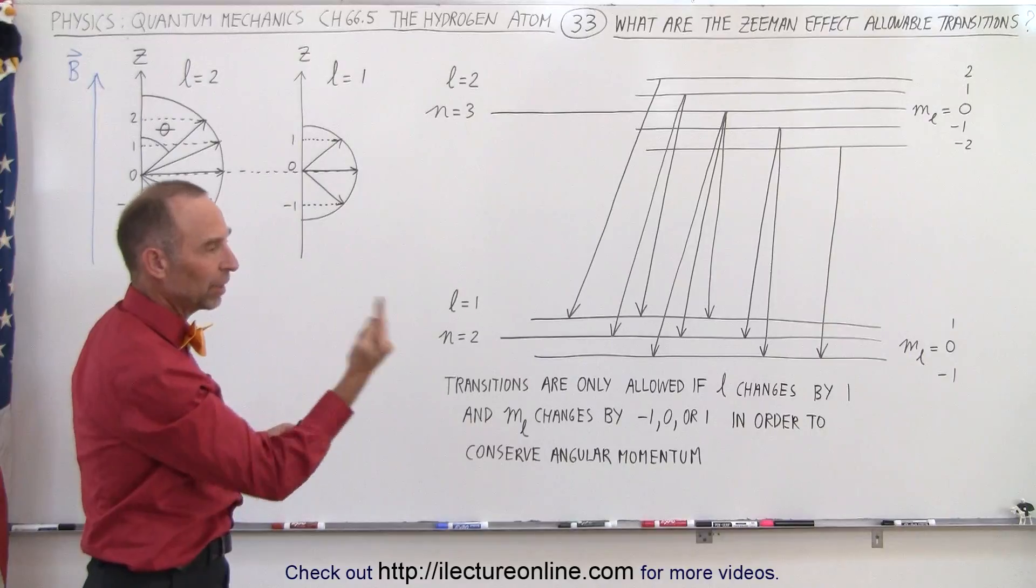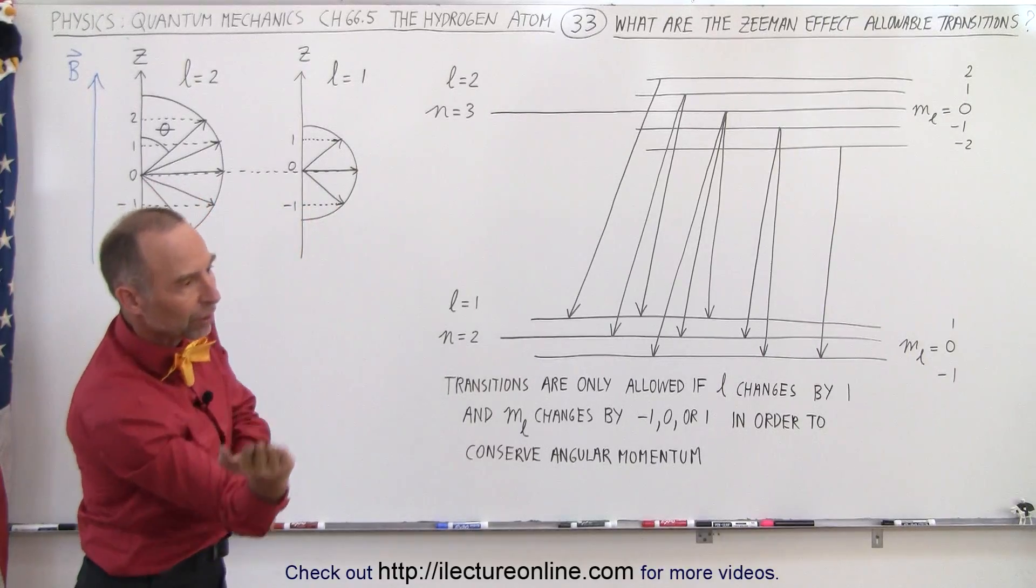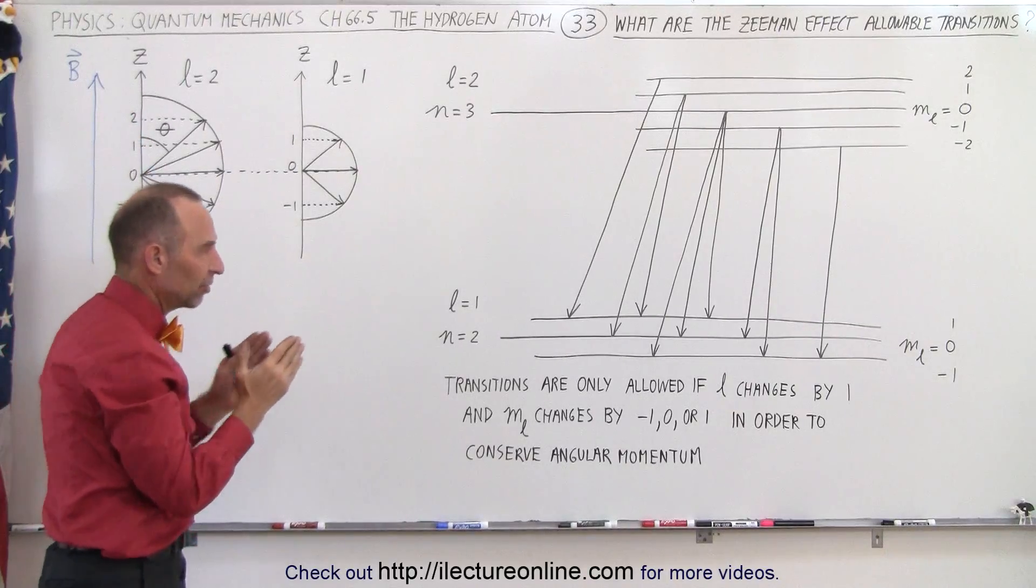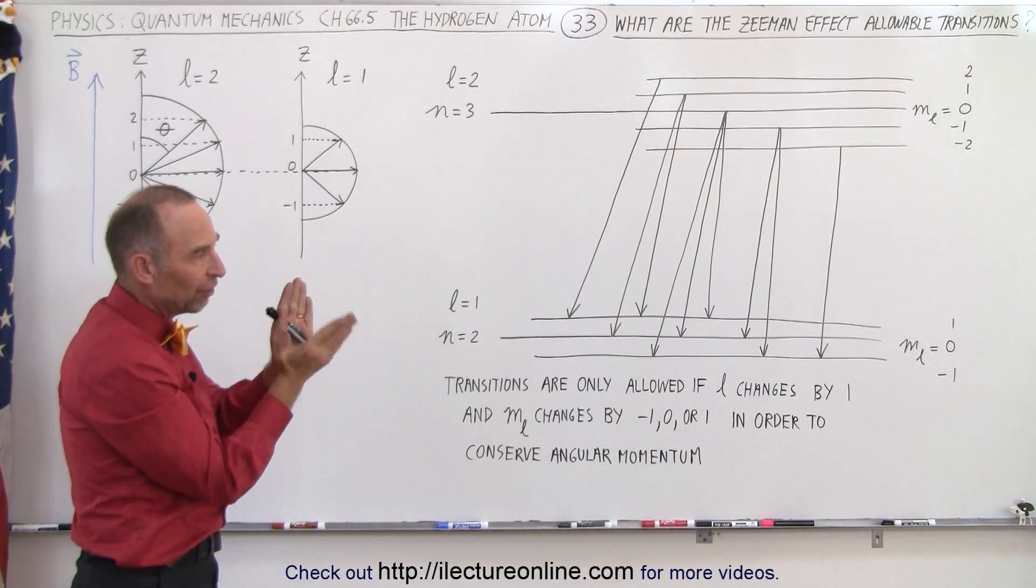So as the electron is spinning around, it can have various orientations, those are quantized, those interact with the magnetic field present, and depending upon the angle difference,